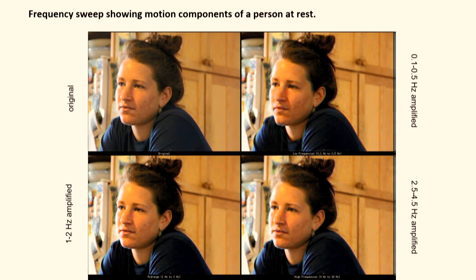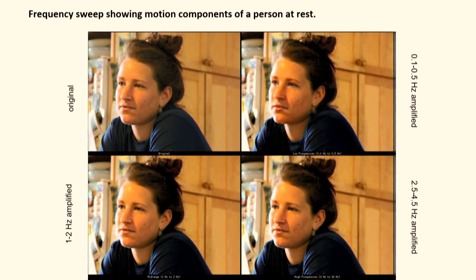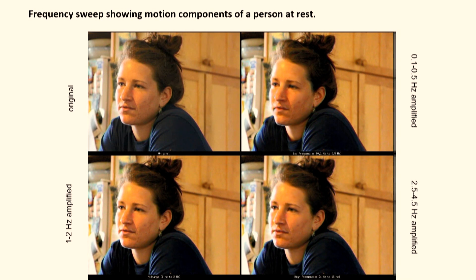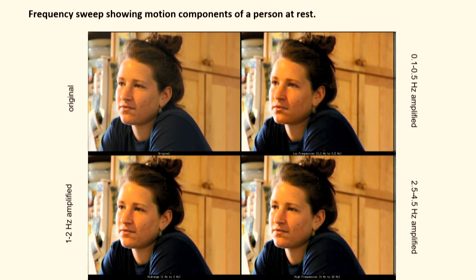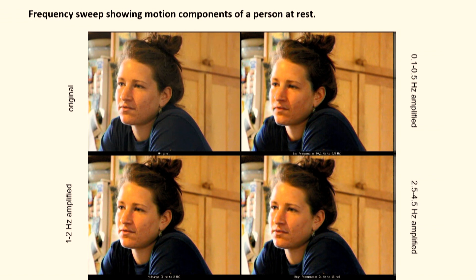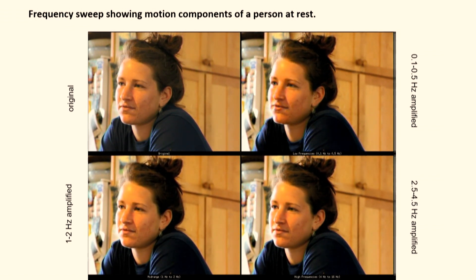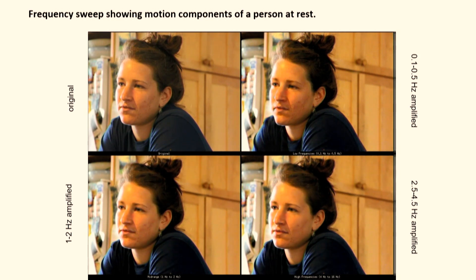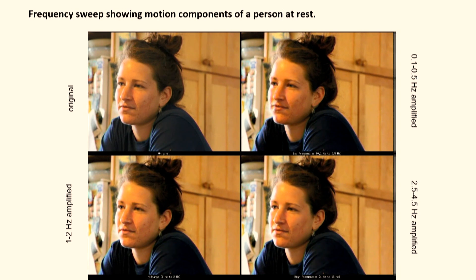Looking at people is a good thing to do with this. At the top left is an ordinary video of my daughter — I asked her just to stay still. At the top right is amplifying the low temporal frequencies, and what you can see is her breathing amplified. The bottom left is higher temporal frequencies between 1 and 2 hertz, and here we see little microexpressions that are amplified.